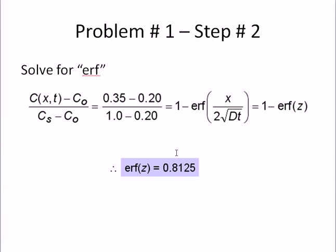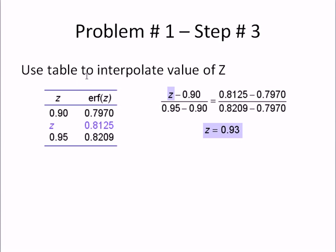Then what we have to do next is go to a table, most likely from a handout or the back of the book, and interpolate our value of z right here. Using our table and basic interpolation skills, we'll get z equals 0.93.